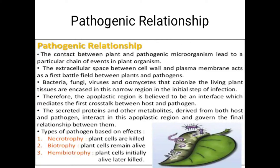Pathogen کی تین اقسام بنتی ہیں: پہلی necrotrophy جس میں plant cells مر جاتے ہیں اور pathogen زندہ رہتا ہے۔ دوسری biotrophy جس میں plant cells زندہ رہتے ہیں اور pathogen مر جاتا ہے۔ تیسری hemibiotrophy جس میں plant cells پہلے زندہ رہتے ہیں اور بعد میں مر جاتے ہیں۔